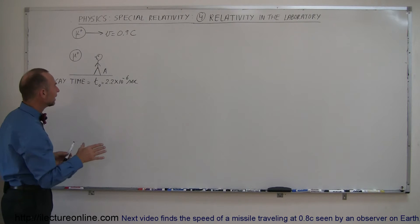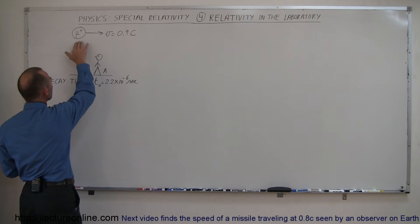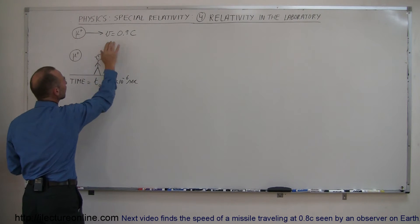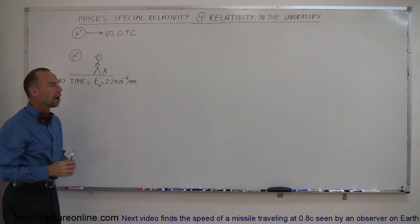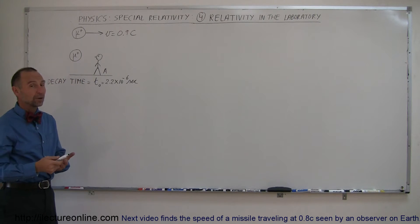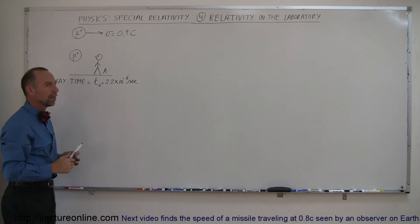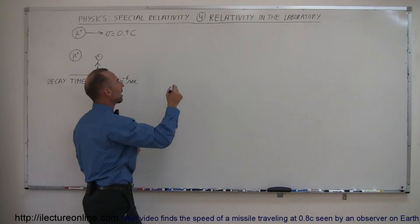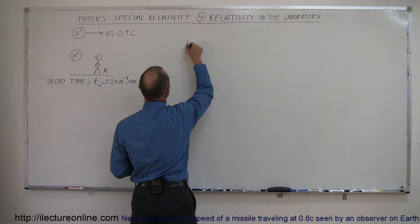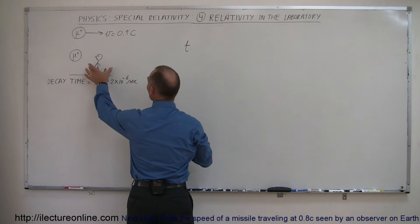But let's say that in the laboratory a particle, a muon, is created and is moving at 0.9 c. So how far would that particle travel and how long would that particle exist before it decays because it's now traveling at a very high velocity.